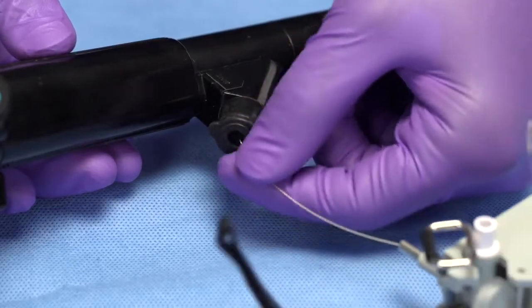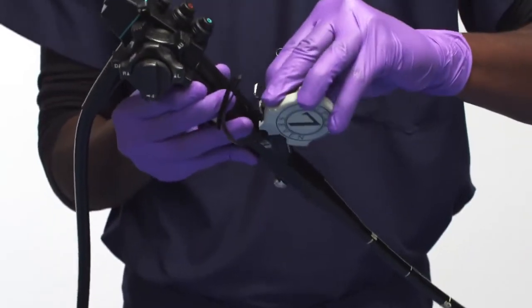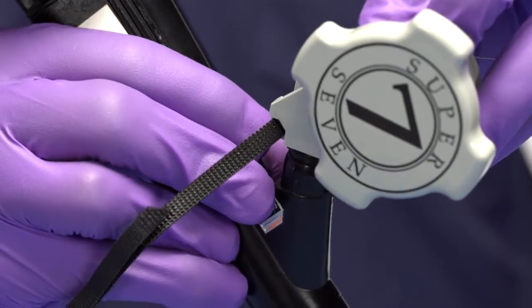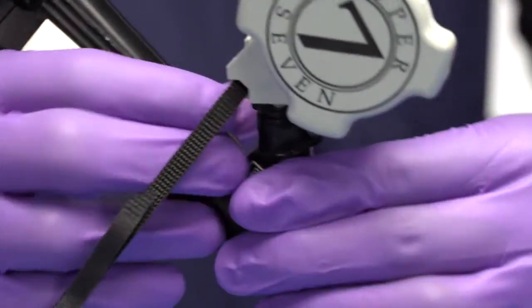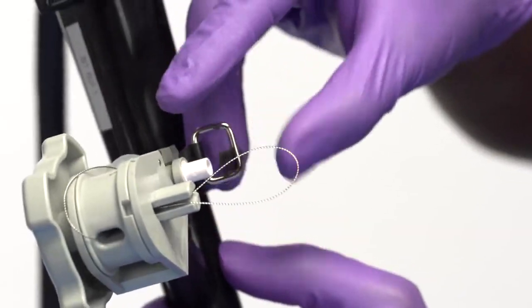Firmly insert the handle unit into the biopsy valve onto the stem of the handle unit. Install the handle unit into the biopsy opening of the endoscope. Secure the handle to the endoscope with the strap.